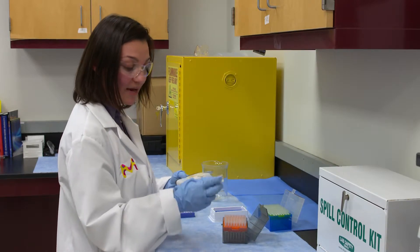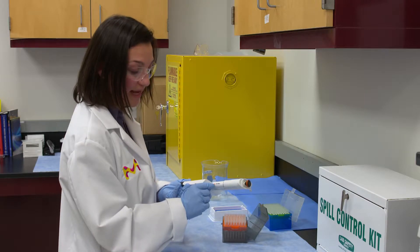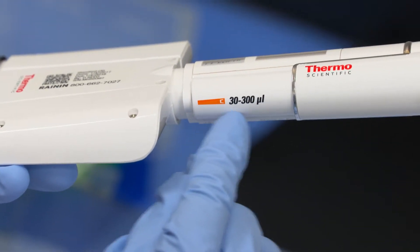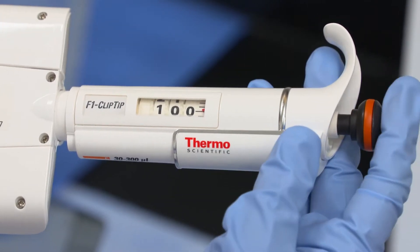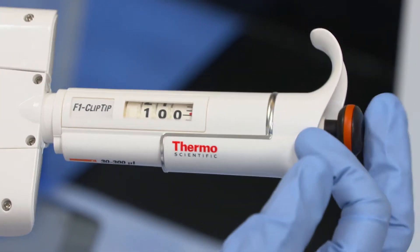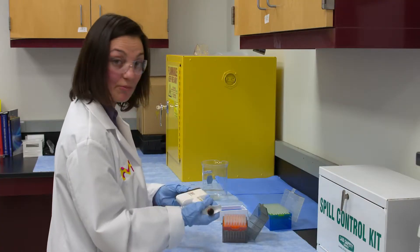I'm going to select the volume that I want to use. This one gives me a range between 30 and 300 microliters. I'm going to select 100 microliters, so I'm just going to turn and I see 100 there and I'm going to lock it back in place and now I'm ready to go.